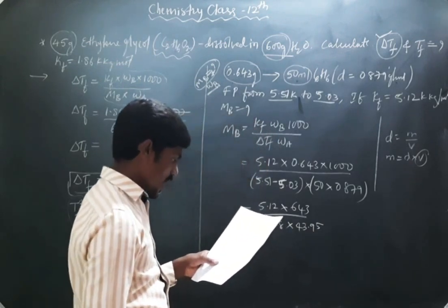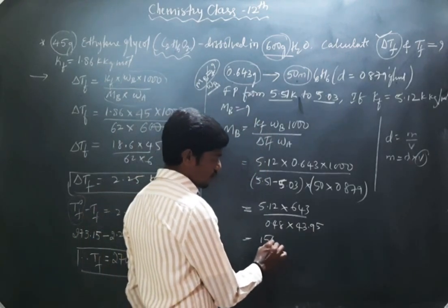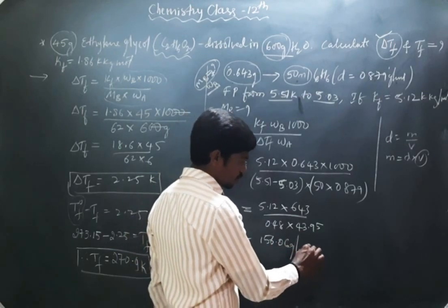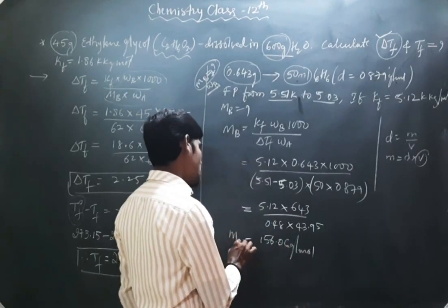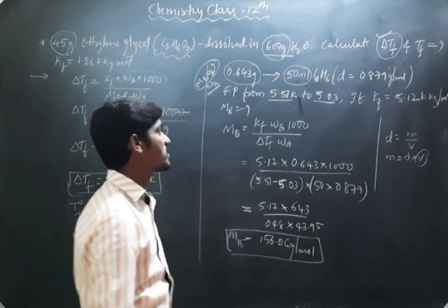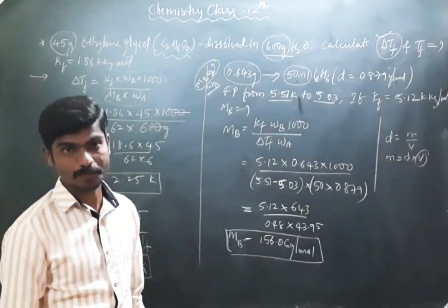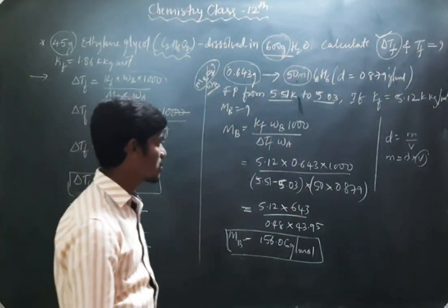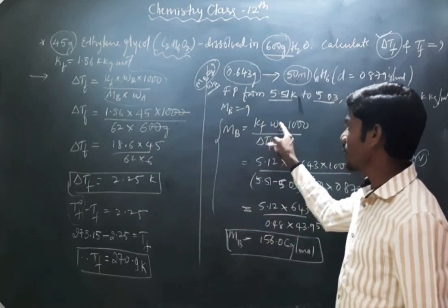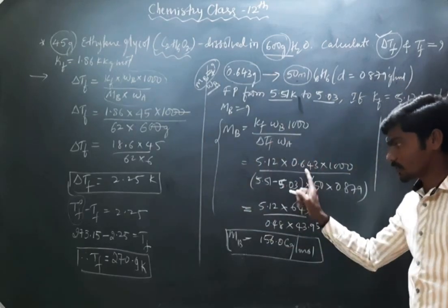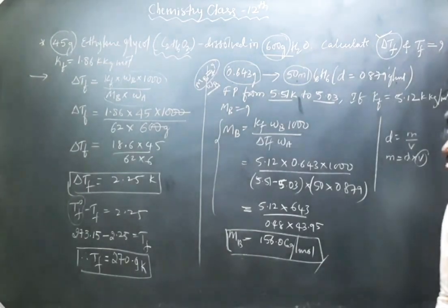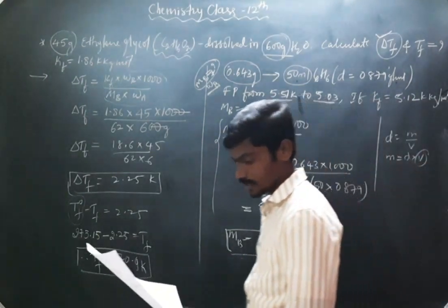Once you verify the calculations, the final answer comes out to 156.06 g/mol. The molar mass of the compound added is 156.06 g/mol. Apply the formula, substitute, and simplify to get the answer.